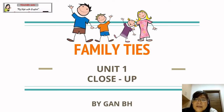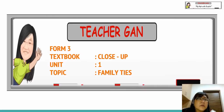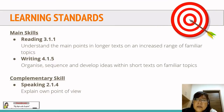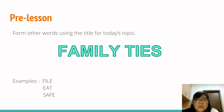Welcome to today's lesson. This lesson is for Form 3 students. The textbook is Close Up and the unit is Unit 1. The topic is Family Ties. First, let's look at the learning standards. We have the main skill, which is Reading 3.1.1: to understand the main points in longer text on an increased range of familiar topics. The second main skill is Writing 4.1.5: organize, sequence and develop ideas within short text on familiar topics. The complementary skill is Speaking 2.1.4: explain own point of view.